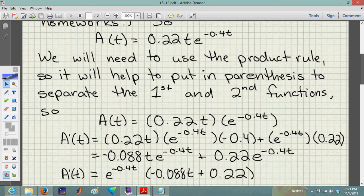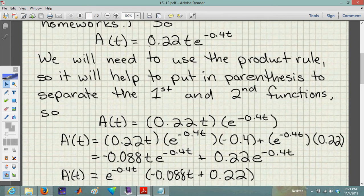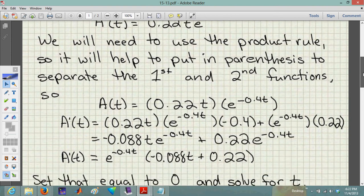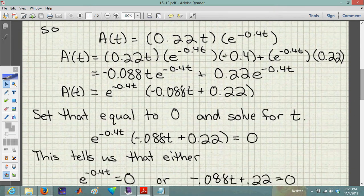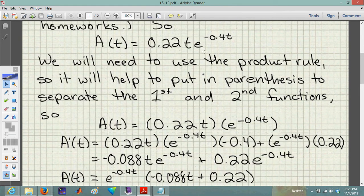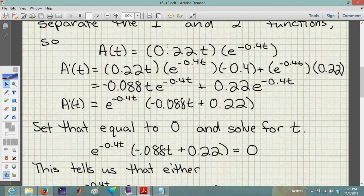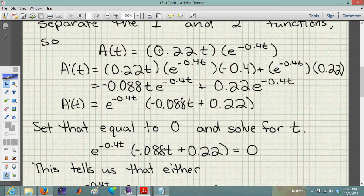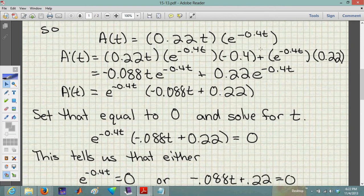So they are giving us A of t equals 0.22t times e to the negative 0.4t power. We're going to have to use the product rule to solve this. And what I did is kind of split this into parentheses so you can see the two different functions that we're multiplying. When you look at that, when it's all in one, it's a little bit hard to see where you might be using the product rule. So think about it a little bit. What's the first function and what's the second function? In this case, 0.22t is the first function and e to the negative 0.4t is the second function. So we use the product rule.